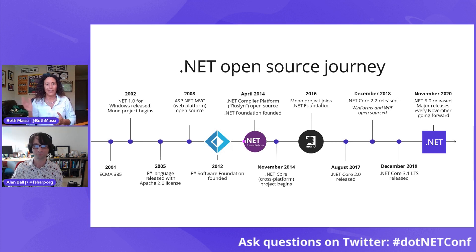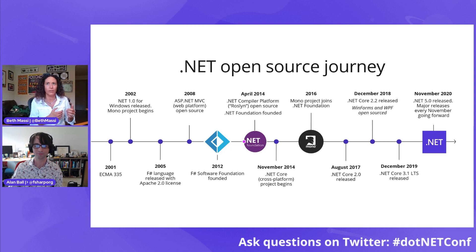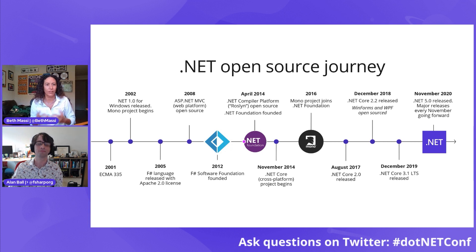In November 2014, the .NET Core project began — essentially a cross-platform open source reboot of the .NET Framework. The Mono project joined the .NET Foundation in 2016, the same year Microsoft purchased Xamarin, so the family kind of joined back together. Since then .NET has evolved to become more and more unified.